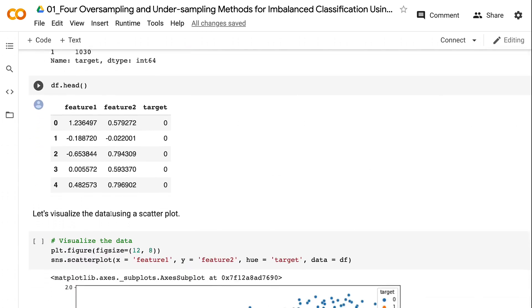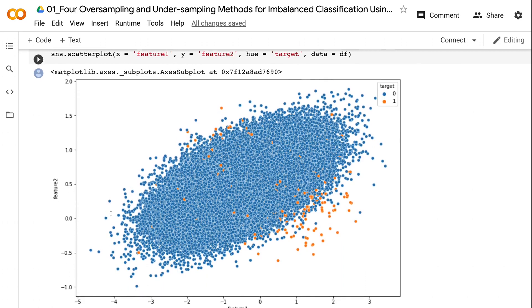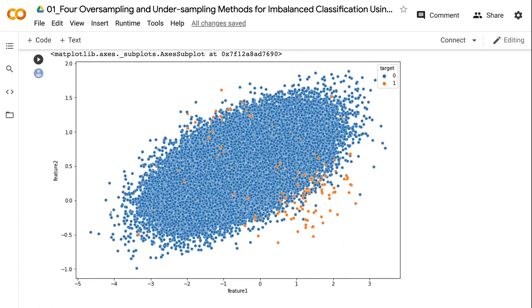Let's visualize the data using a scatter plot. We can see that the majority of the dataset belongs to class 0, and a small portion of the dataset belongs to class 1.